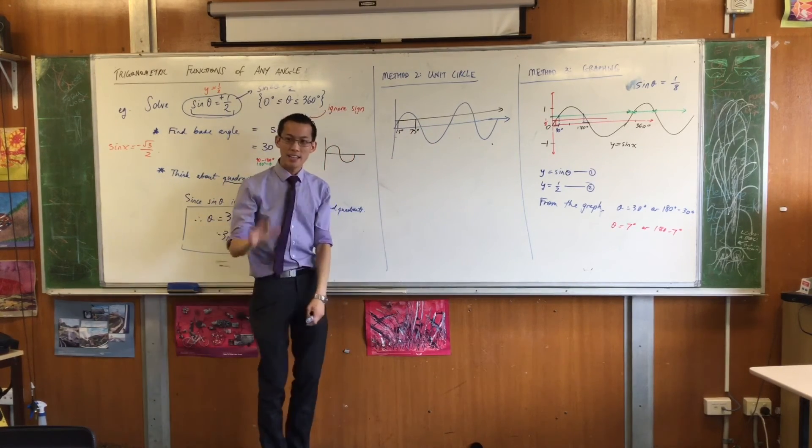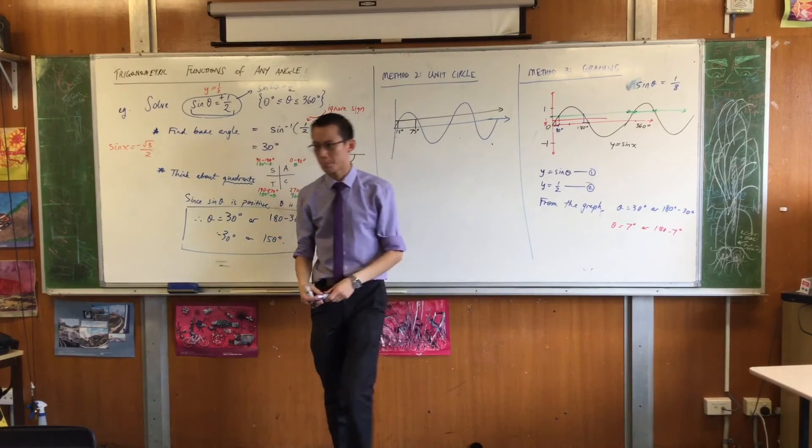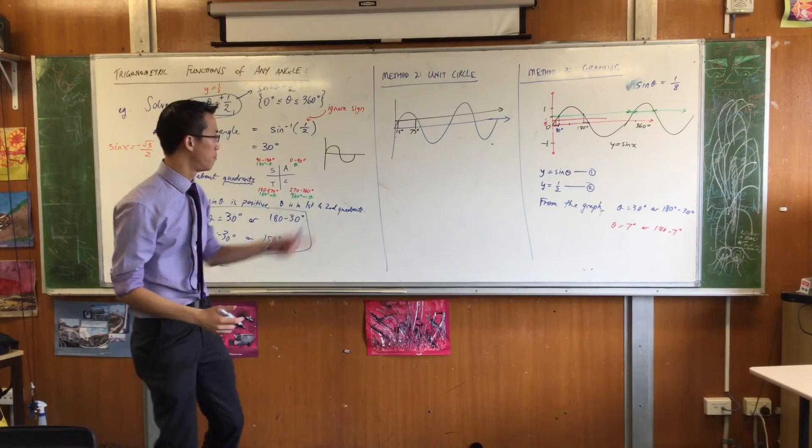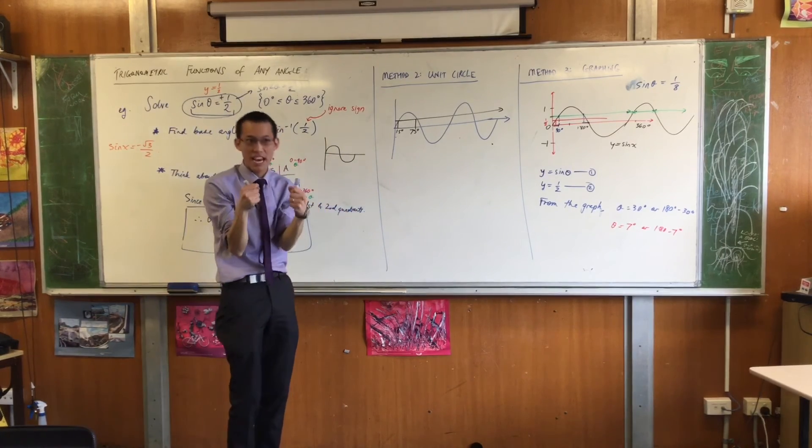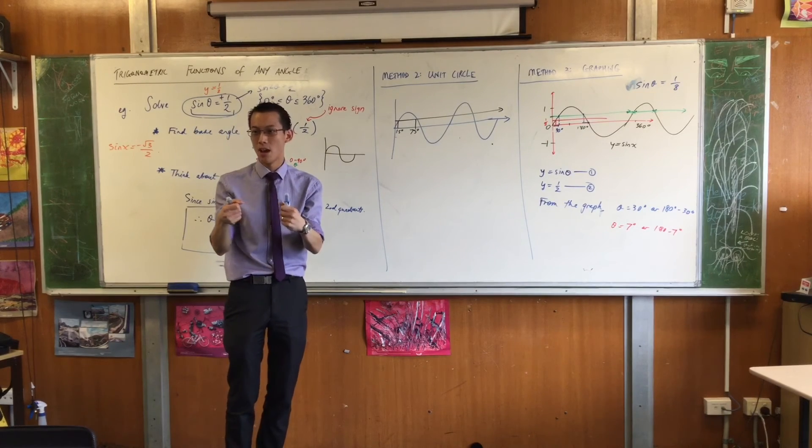And here's the cool thing, right? Remember how I said this had a period of what? What was the period again? 360 degrees, right? Well I just took the whole thing and I squashed it down so it takes half the space. So the period isn't 360 anymore, it's 180. It's half the space.